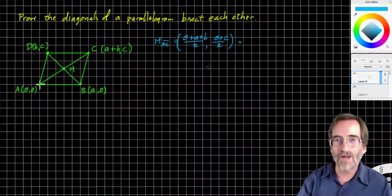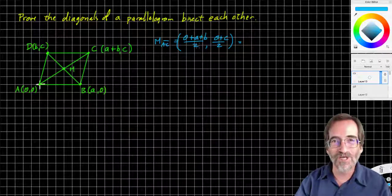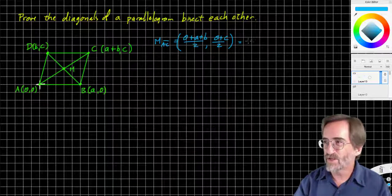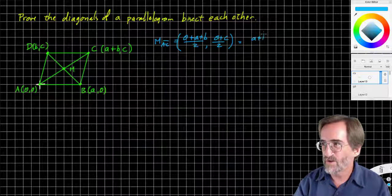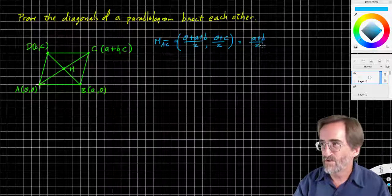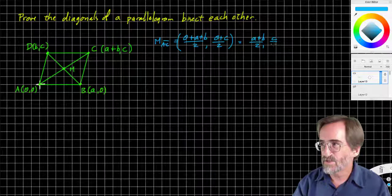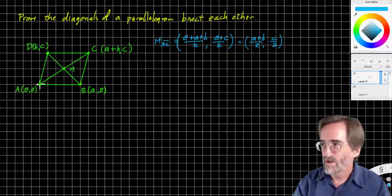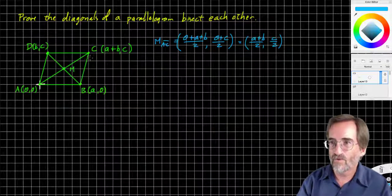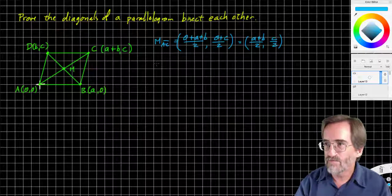And the y's added together are zero and c added together and divided by two. Zero plus c divided by two. Now I don't know the last time you tried adding zero to something, it doesn't change anything. Zero plus a plus b is just a plus b divided by two. And zero plus c is just c divided by two. So there's our midpoint for AC.